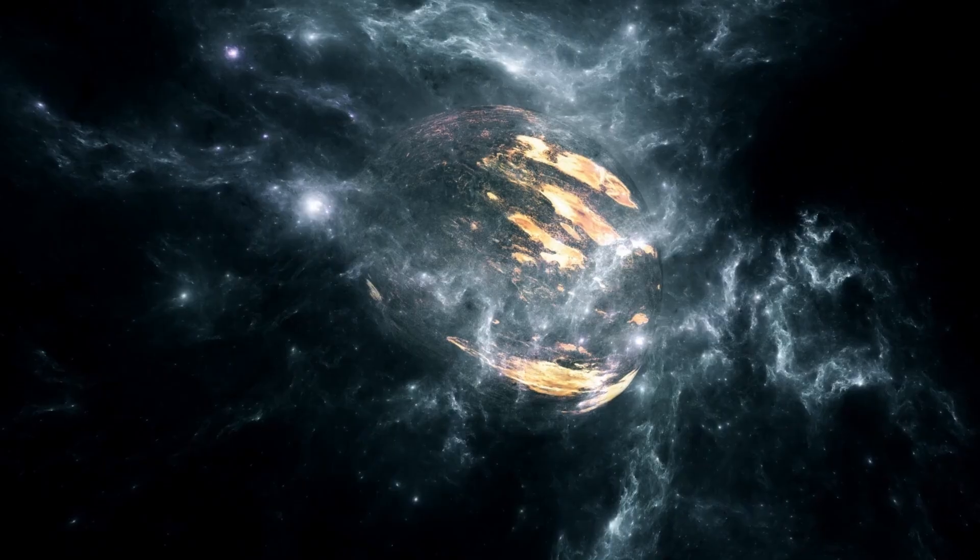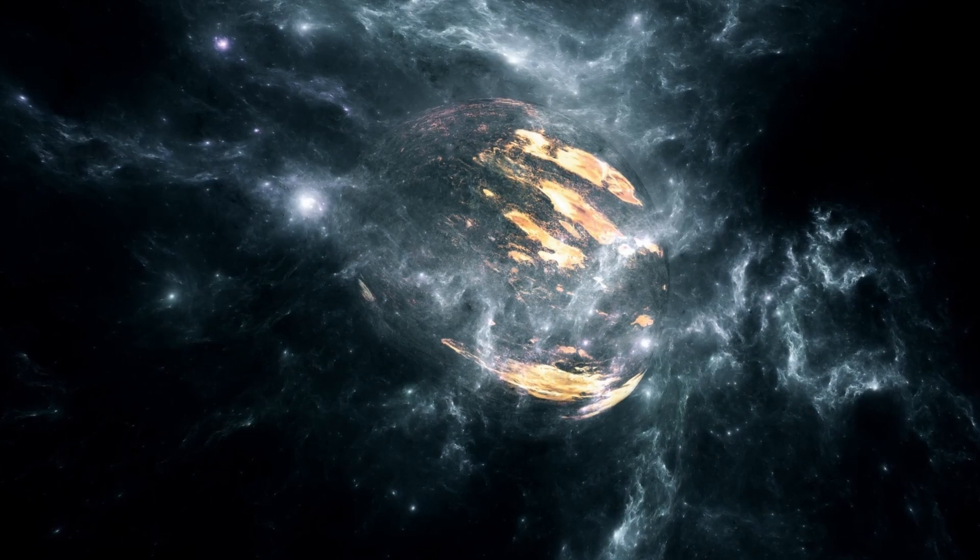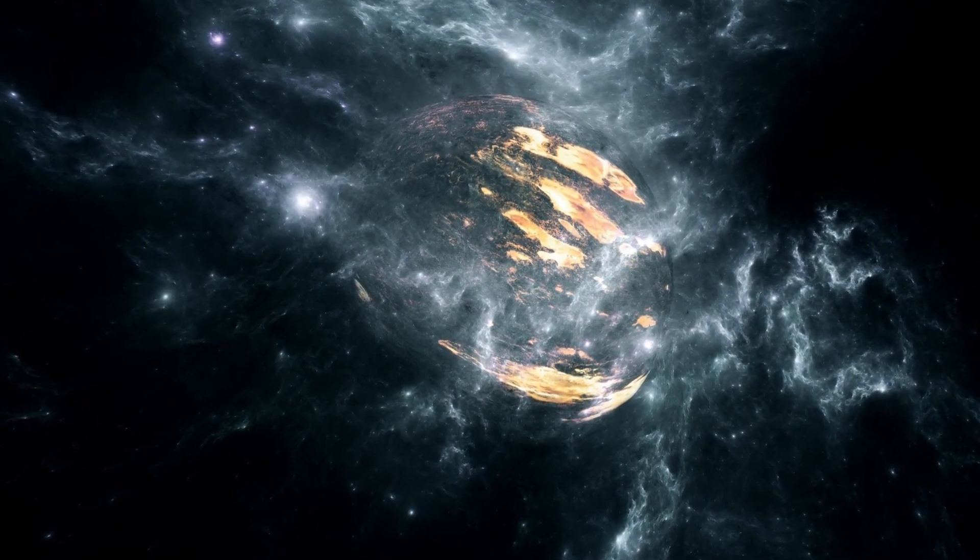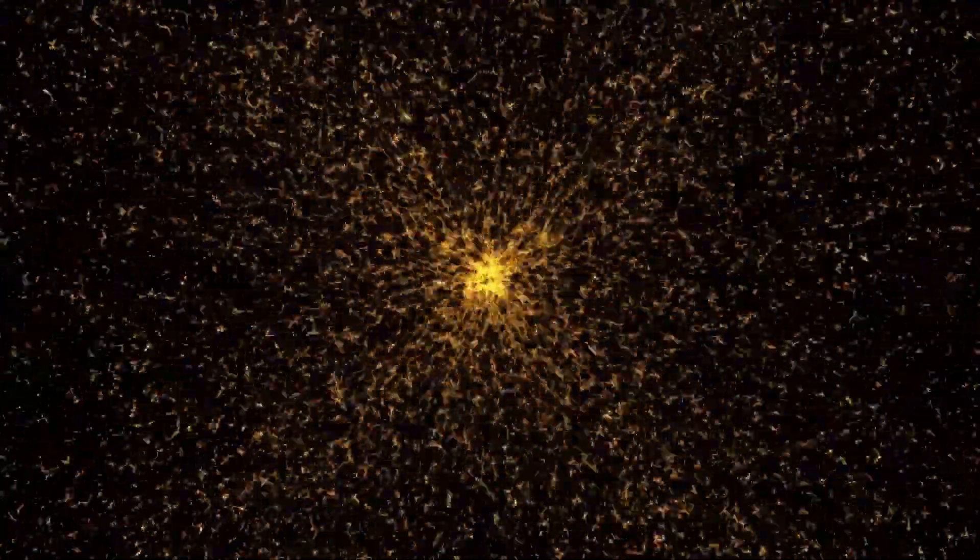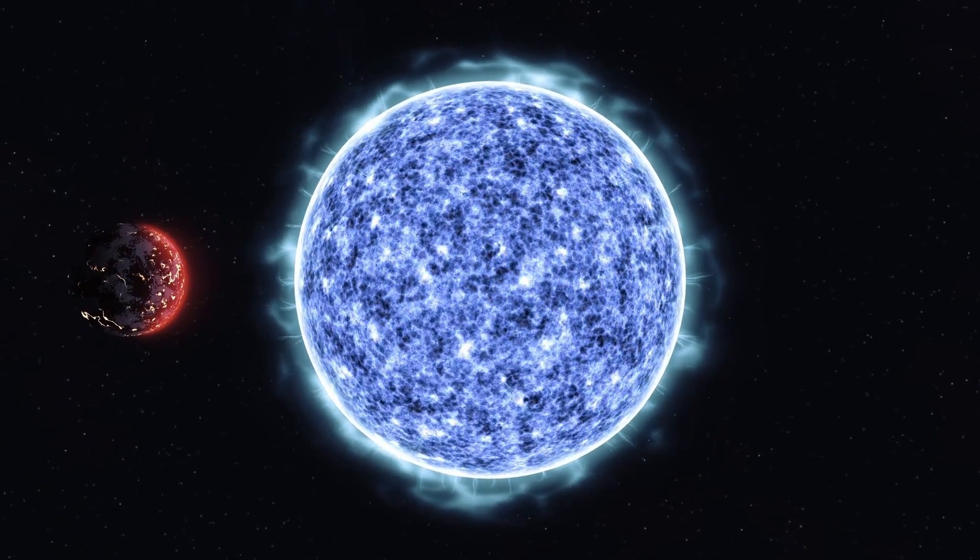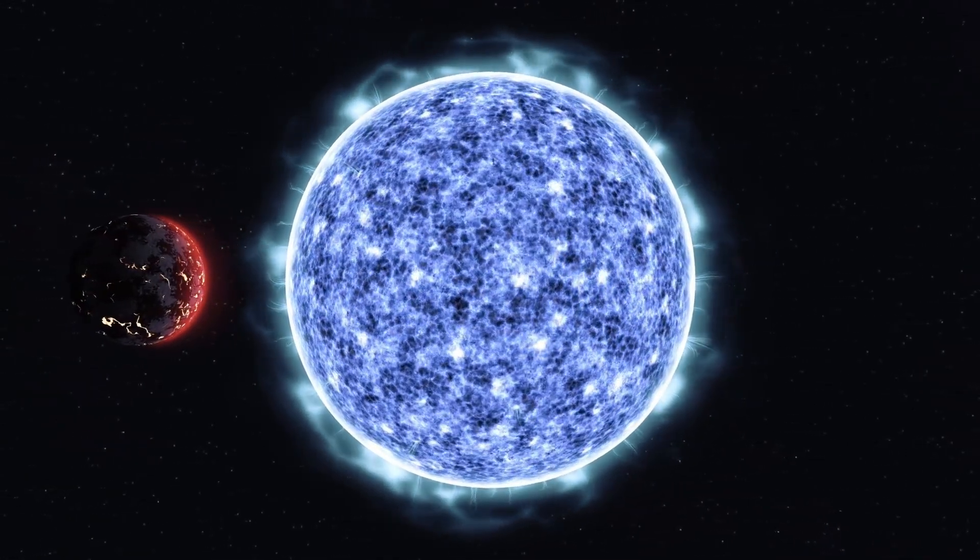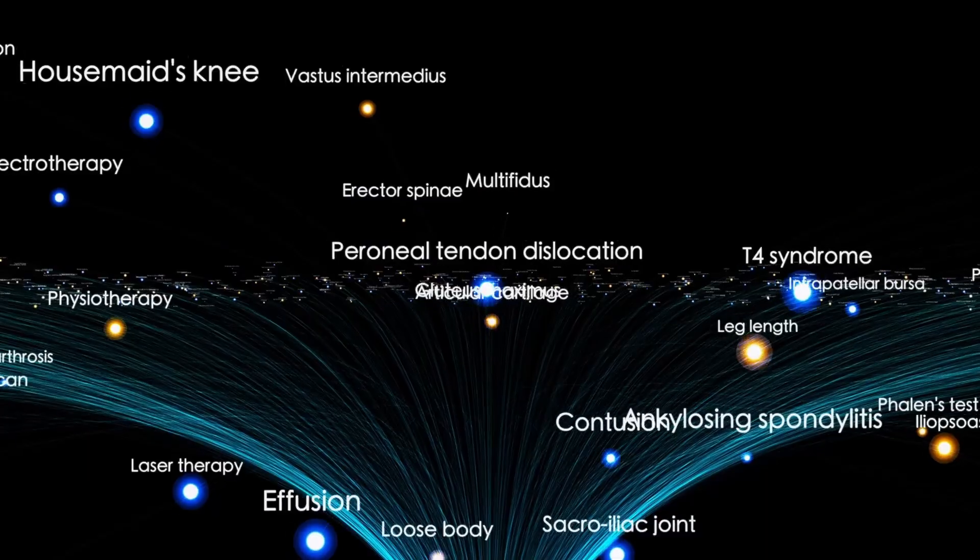Stars live through incredible life cycles, and Betelgeuse is currently in one of the final stages of its evolution. It is a red supergiant star, estimated to be about 764 times larger than our Sun. This scale is nearly incomprehensible to humans. If Betelgeuse replaced the Sun, its surface would extend past Mars' orbit, showcasing just how expansive and evolved it is.